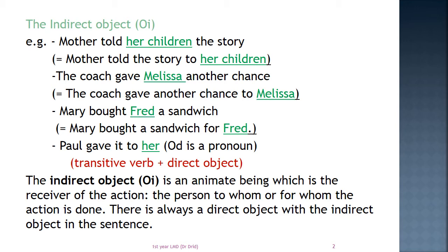There is always a direct object with the indirect object in the sentence. Mother told her children the story. Mother told what? The story. To whom? Who received the action of telling the story? Her children. We can also say: Mother told the story to her children — we reverse the position of the direct and indirect objects, and this is correct. Her children is always the indirect object, even if we change its position.